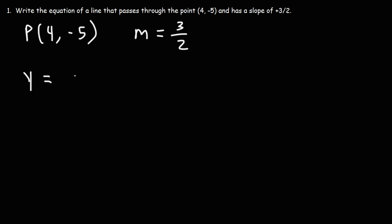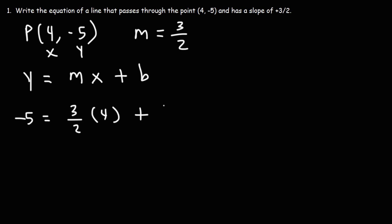We could use the slope-intercept formula y = mx + b. We have m, we have the value of x and the value of y at a certain point on the line, and with this information we can plug those three things in and get b, the y-intercept. So let's replace y with -5, plug in 3/2 for m, and replace x with 4. Then we can isolate b.